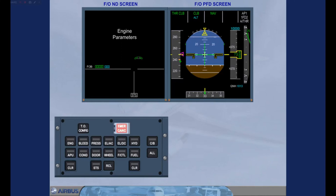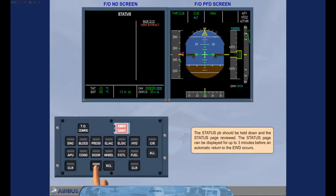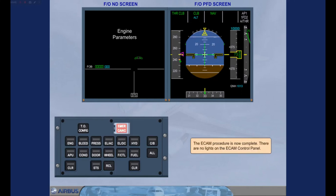The status push button should be held down and the status page reviewed. The status page can be displayed for up to three minutes before an automatic return to the engine warning display occurs. Once the review is complete, the push button is released and the engine warning display returns. The E-CAM procedure is now complete and there are no lights on the E-CAM control panel.